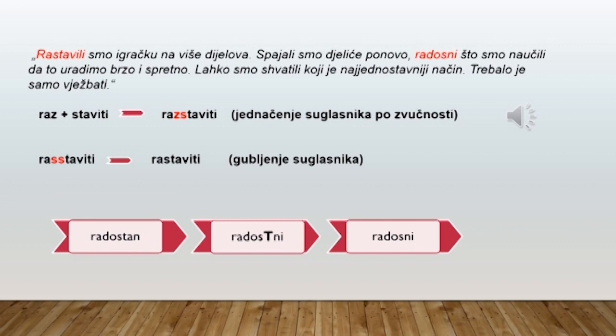Da vidimo kako su nastali. Glagol rastaviti nastaje od prefiksa raz plus glagola staviti. Kada to spojimo dobijemo raz-staviti. U riječi jedan do drugog našli su se jedan zvučni i jedan bezvučni suglasnik koji se jednače pa dobijemo raz-staviti. Pridjev radostan nastao je od radost, ali suglasnička grupa STN je teška za izgovor pa tu suglasničku grupu uprošćavamo tako što se gubi suglasnik T.